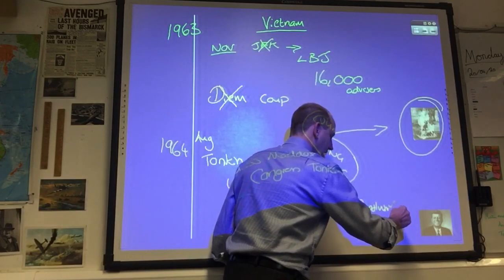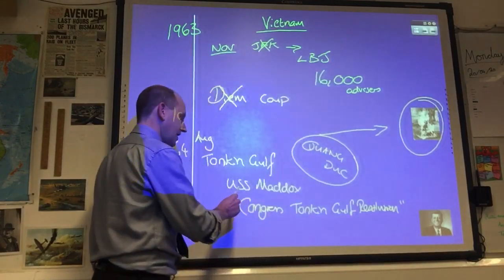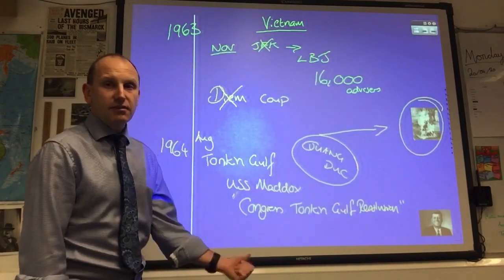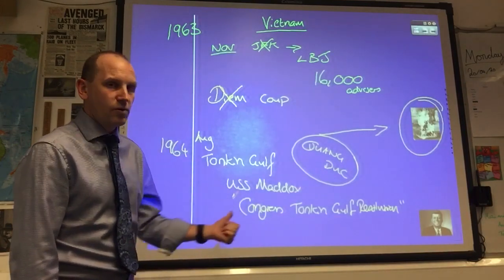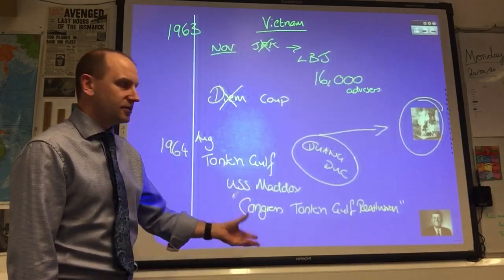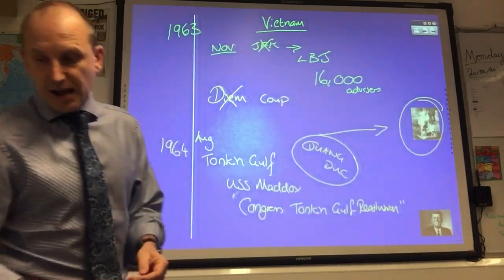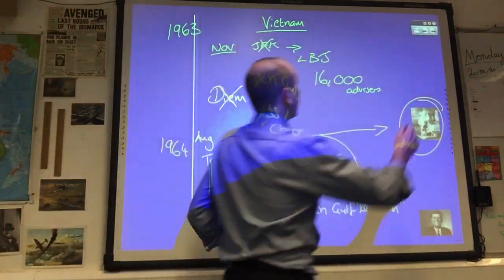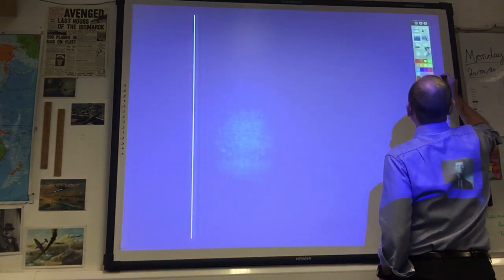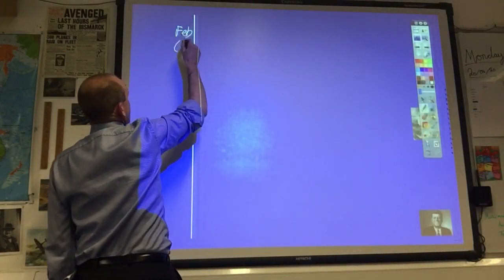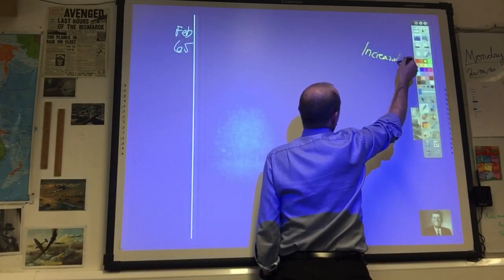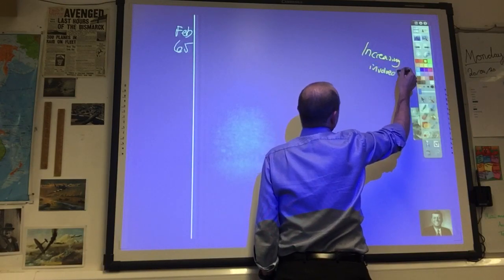The Tonkin Gulf Resolution gives Johnson the power to do absolutely anything he wants, to take any means necessary to restore the peace and achieve security for America in that region. It's not a declaration of war. America is still only ever helping out South Vietnam. There's no war ever declared, but we all know it's a war. It means he's basically got a free hand to spend as much money as he likes on this, because Congress controls the money. You must be able to talk about American increasing involvement and why the Americans became increasingly involved.